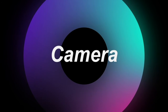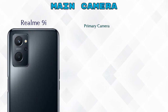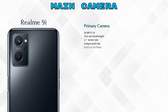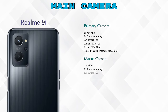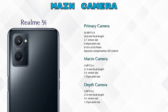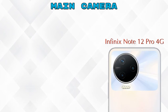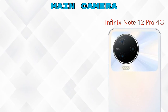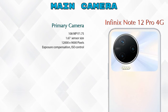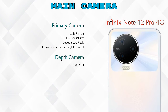Now let's talk about the camera. For the rear camera, Realme 9i has three cameras: primary camera, macro camera, and depth camera. Note 12 Pro 4G also has three cameras: primary camera, depth camera, and an AI lens.